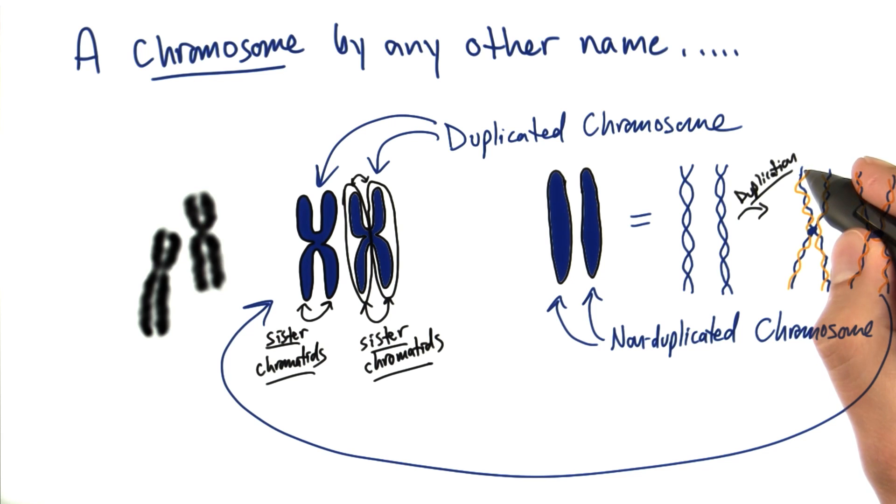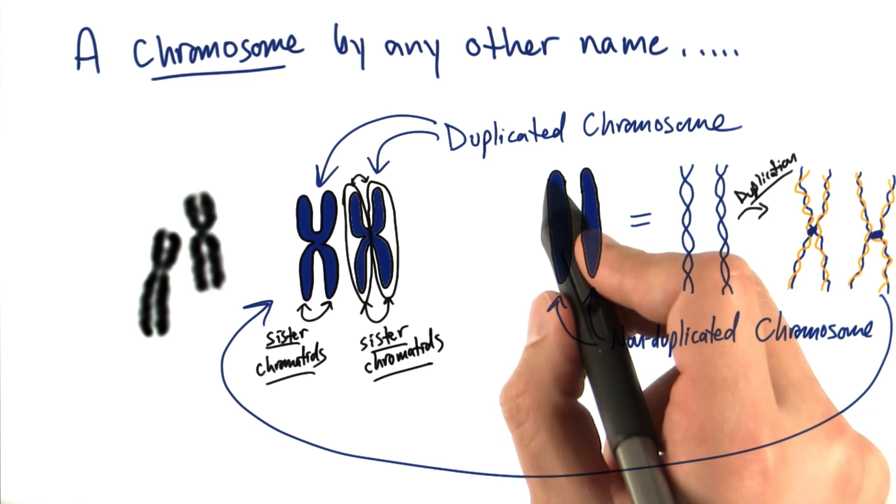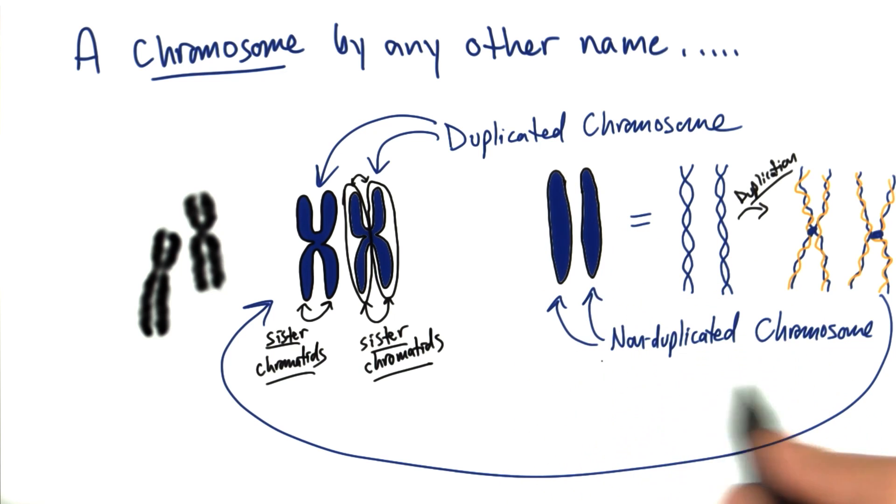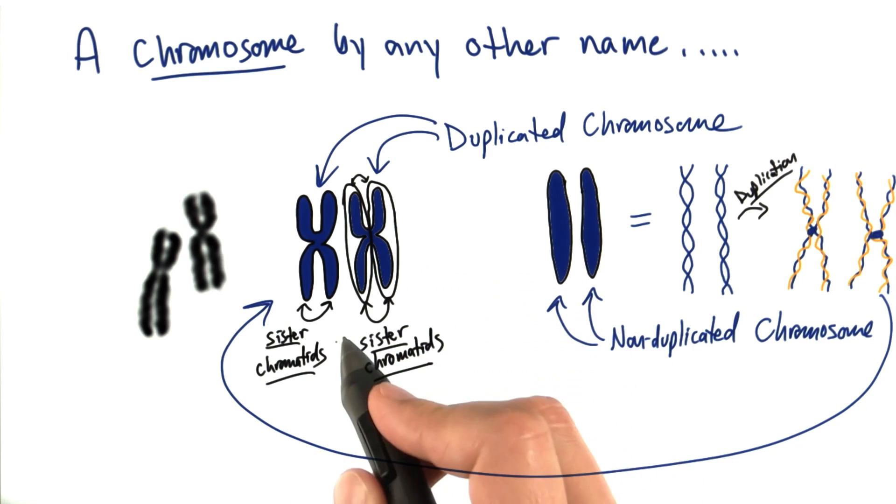And because they're genetically identical, we call these sister chromatids here within this X. That's what the sister chromatids are. But we still call the linear non-duplicated chromosome a chromosome, and we call the duplicated version with sister chromatids a chromosome. It's still a chromosome structure.